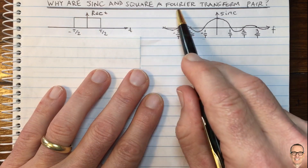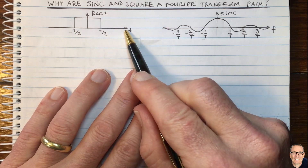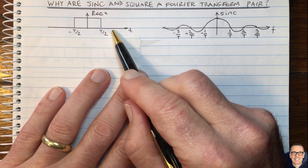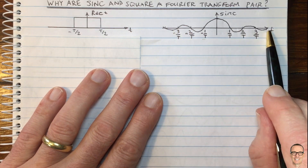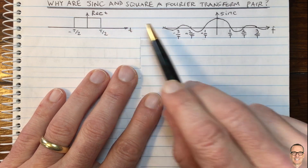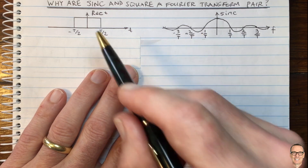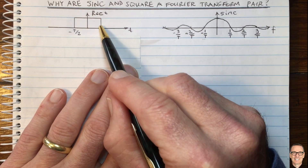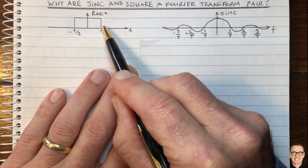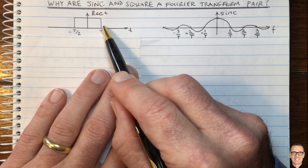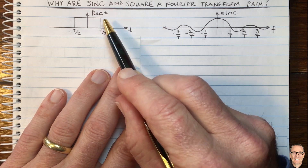Why are sinc and square a Fourier transform pair? When I say square, I'm talking about the rect function in the time domain. Fourier theory tells us that its Fourier transform is a sinc function. So let's look at some intuition about this. One thing people often ask is: how can it possibly be that a square function, a function with sharp corners, can be constructed by adding together sinusoids, because sinusoids are smooth?